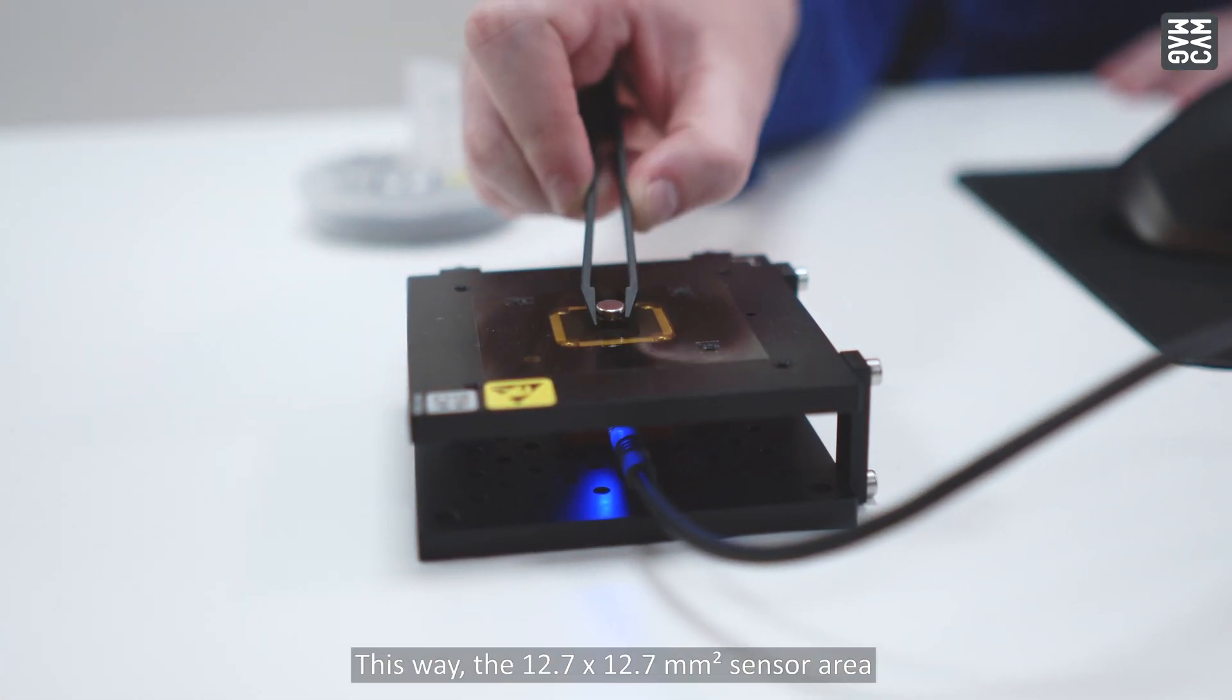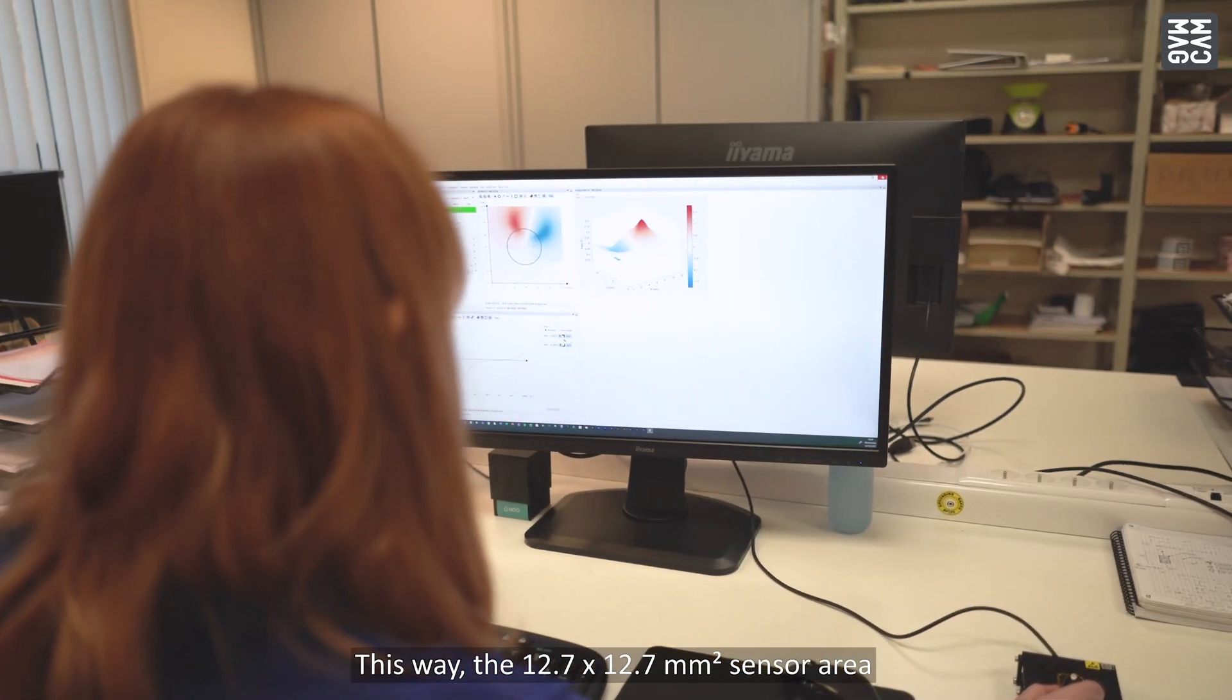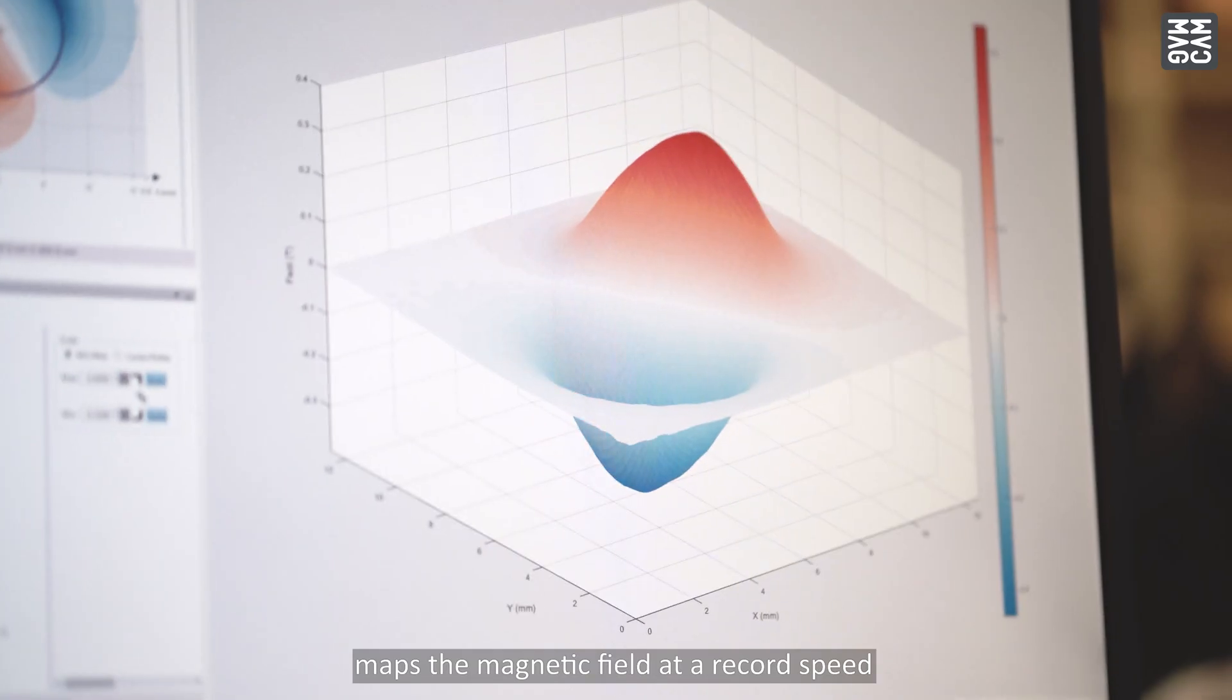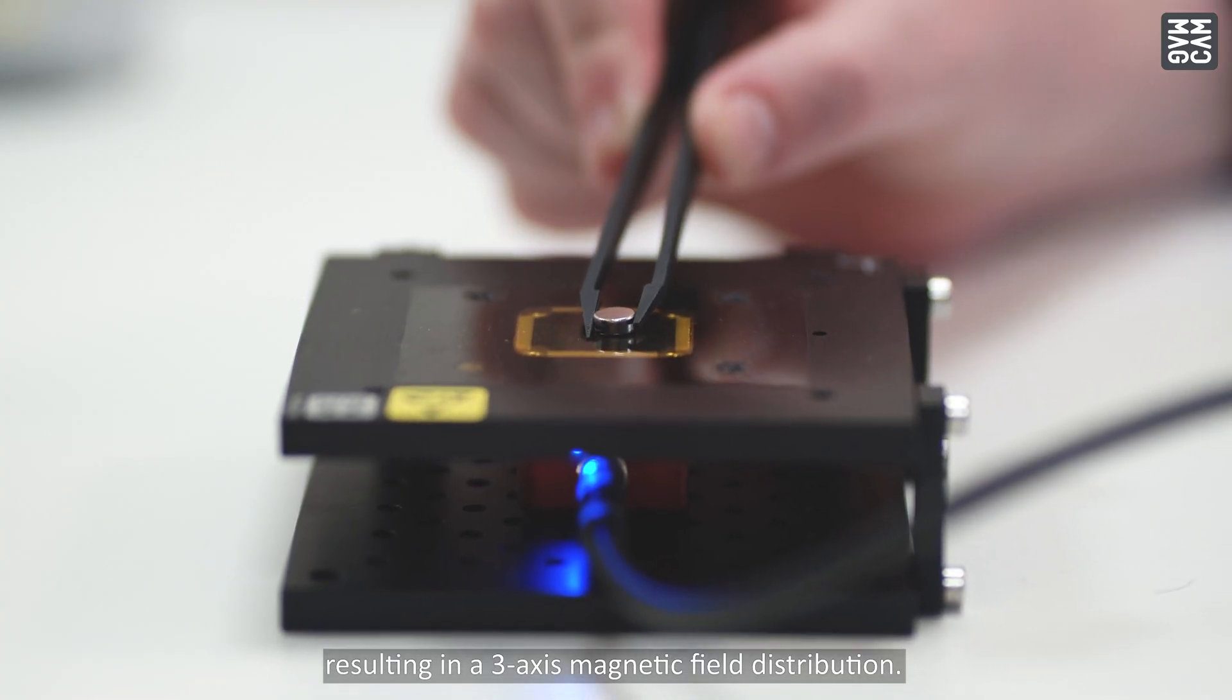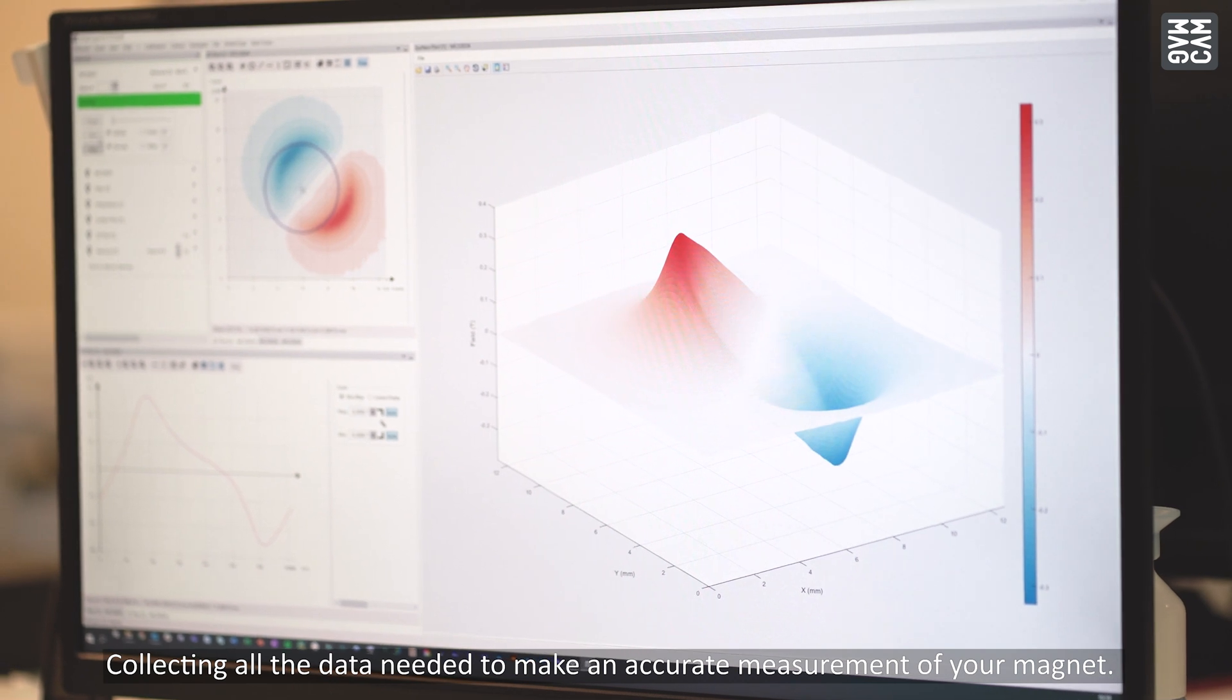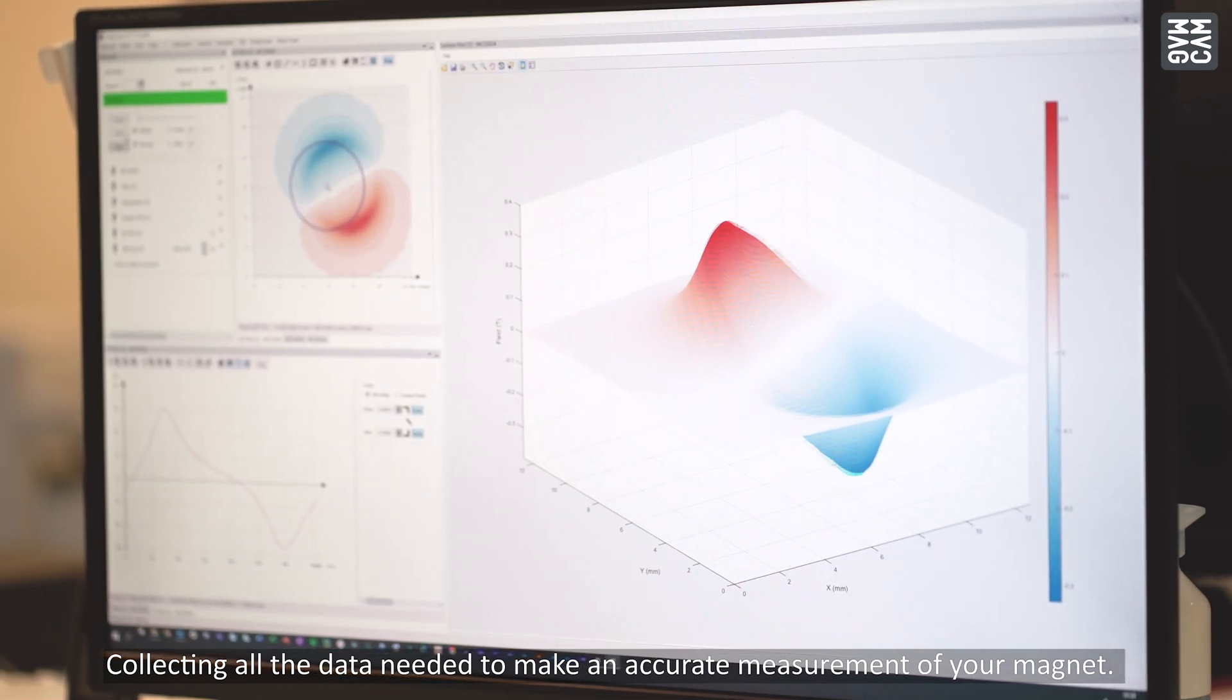This way the 12.7 by 12.7 mm² sensor area maps the magnetic field at a record speed, resulting in a 3-axis magnetic field distribution, collecting all the data needed to make an accurate measurement of your magnets.